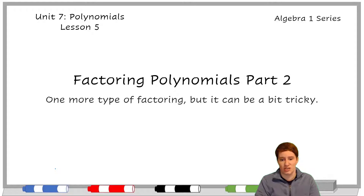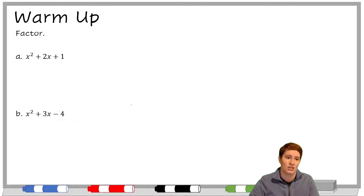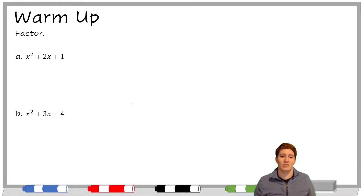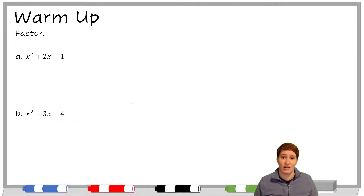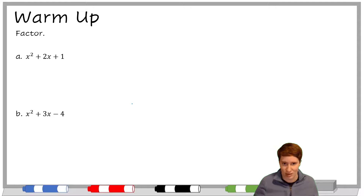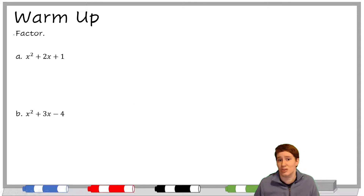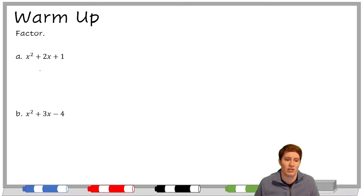Let's check out a warm-up to get back in the groove. These say factor. Knowing the names of these is helpful because these are quadratic trinomials, and we do the same sort of thing every time. We try to split it up into two parentheses. We first check to see if they have a greatest common factor, which they do not.